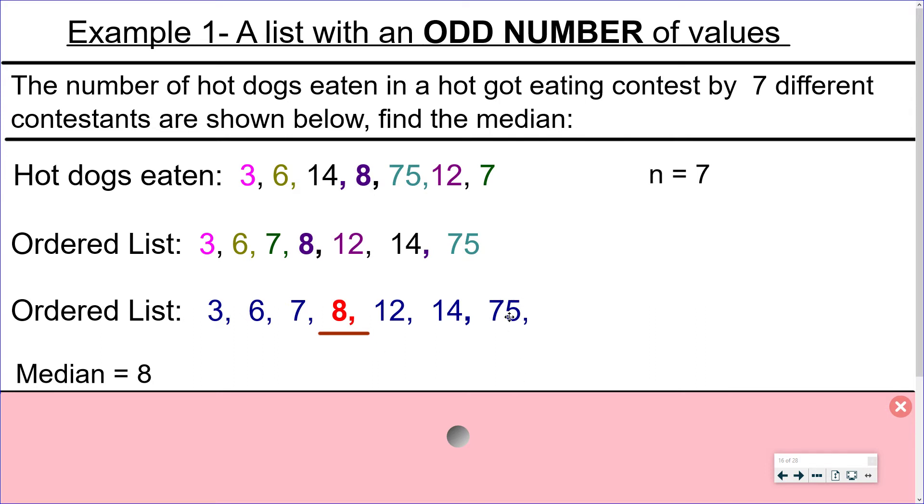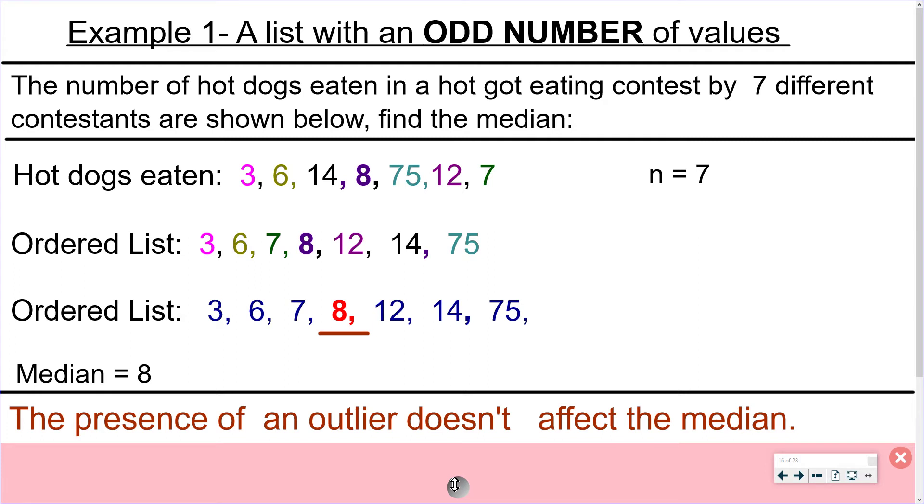So this number 75, it could have been a million, it could have been a billion and the median still would have been eight. So the presence of an outlier doesn't affect the median.